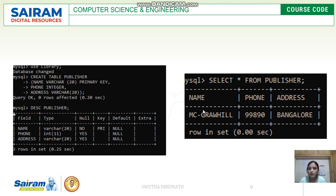The field types are varchar, int, and varchar. For null, the name field takes 'No' because it is the primary key, and the other values take 'Yes' for null. The default value will always be null. This is how the DESC output will be displayed.